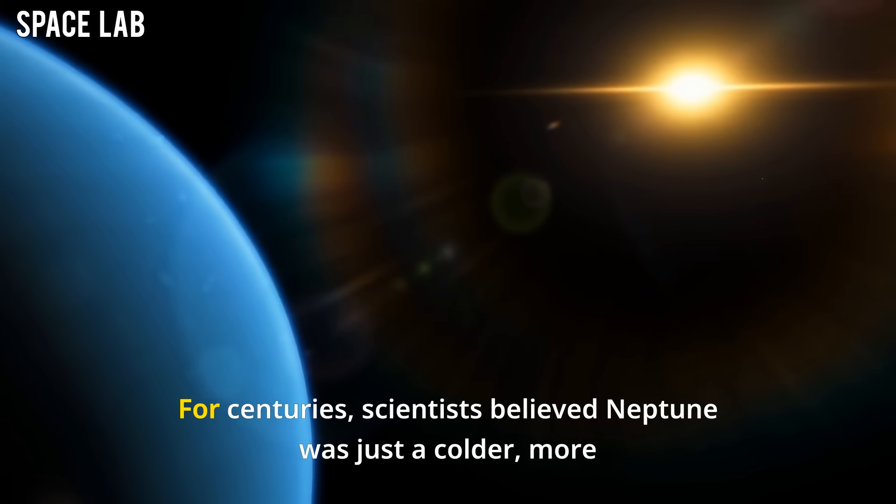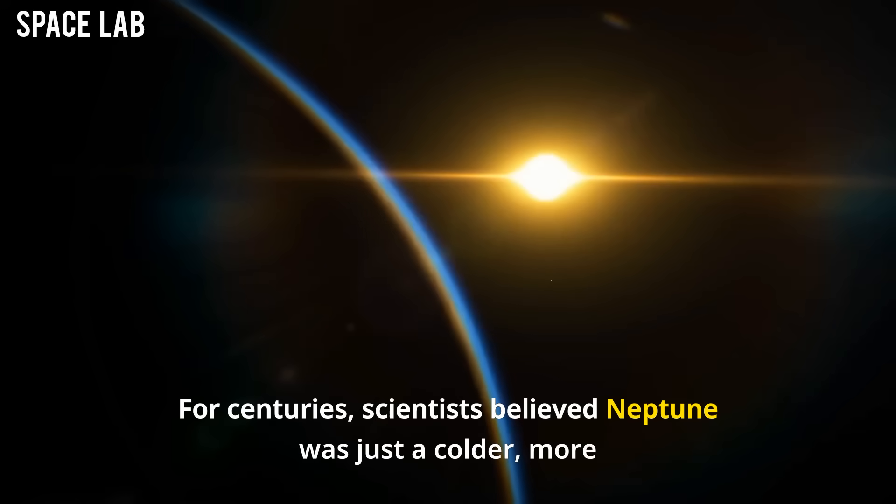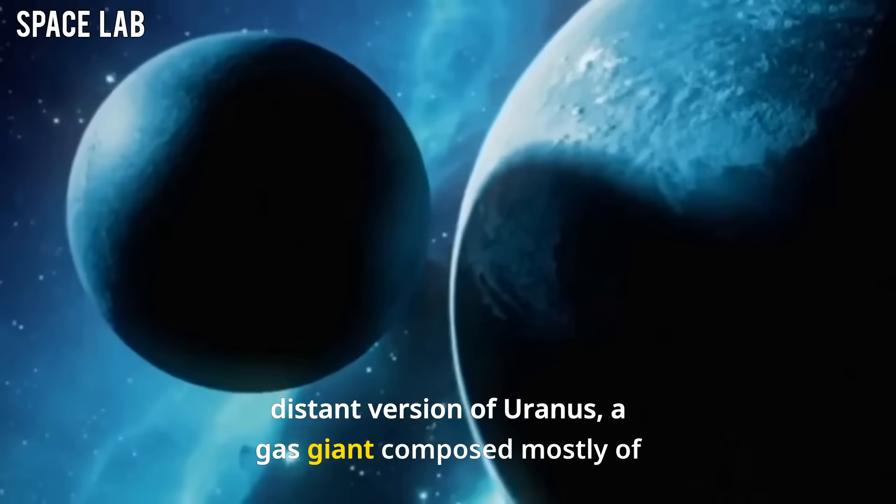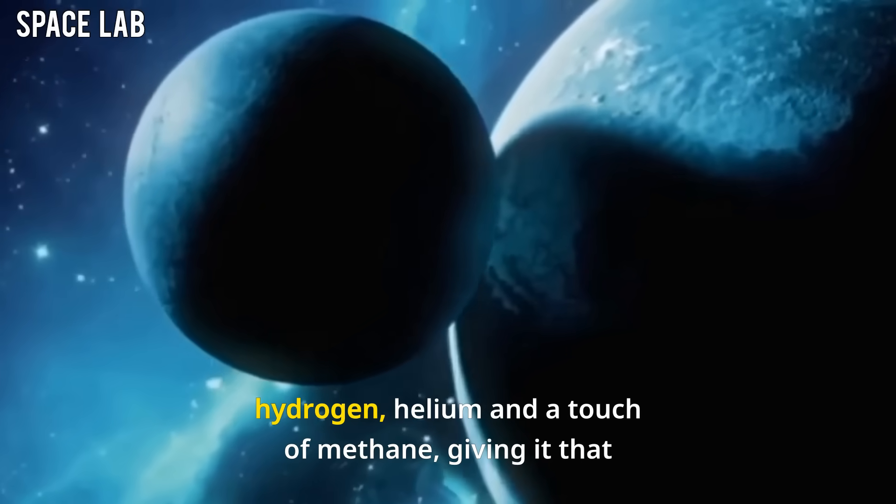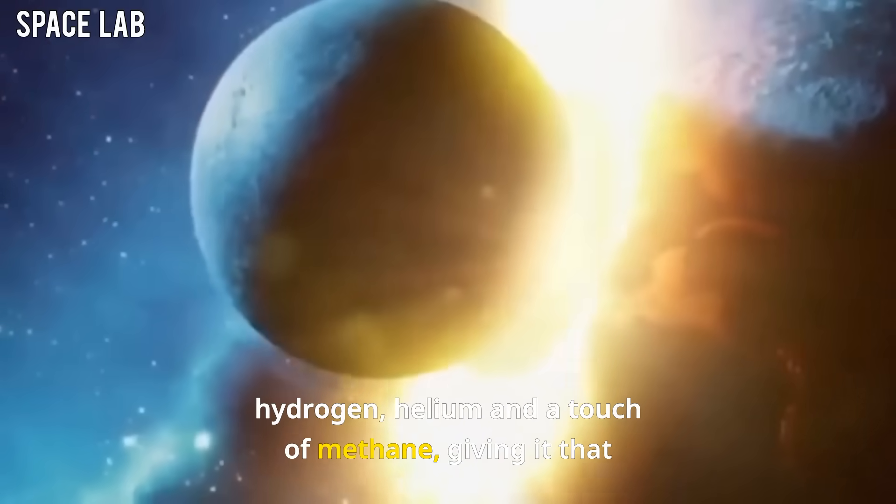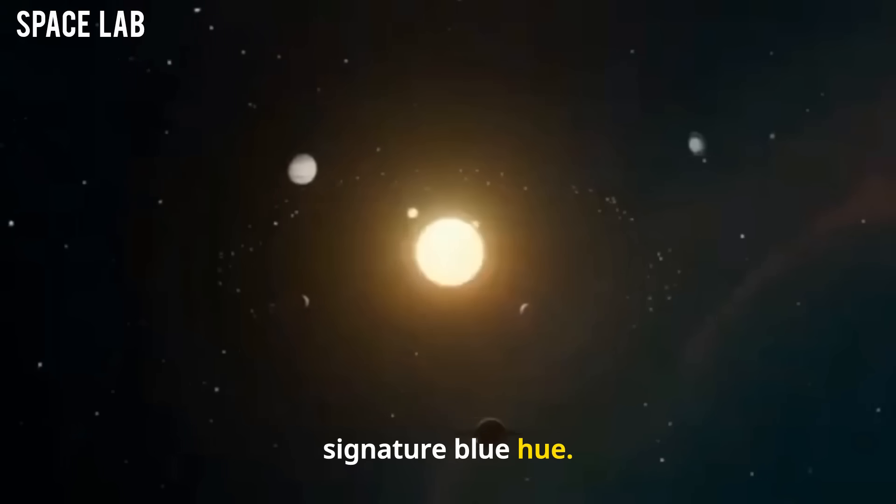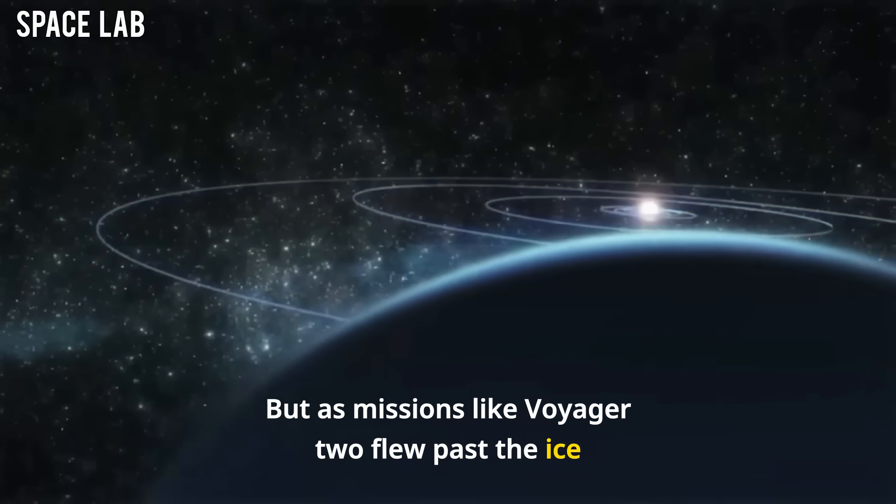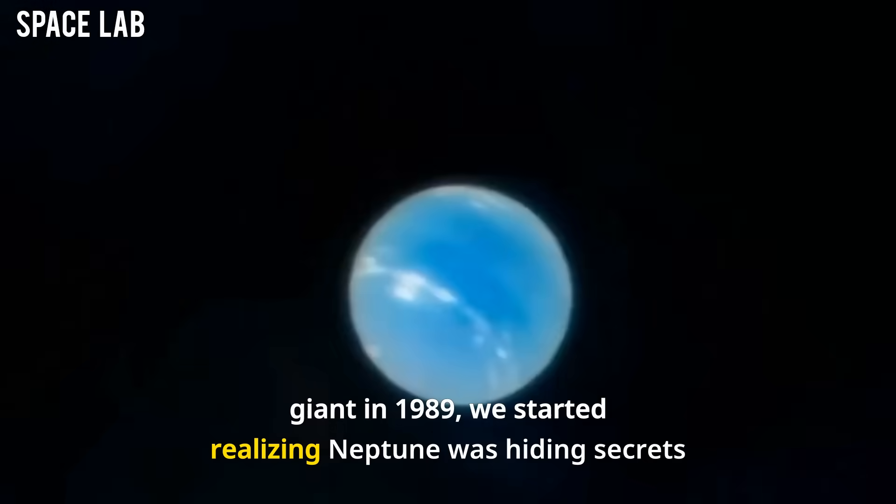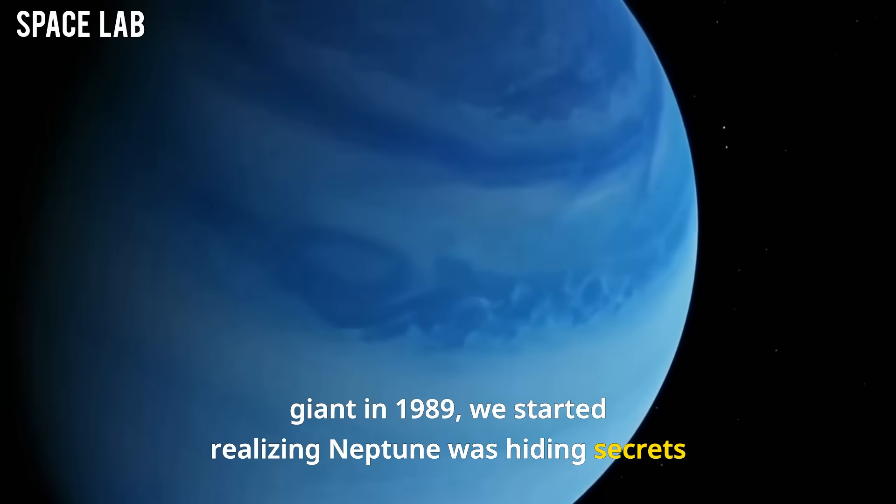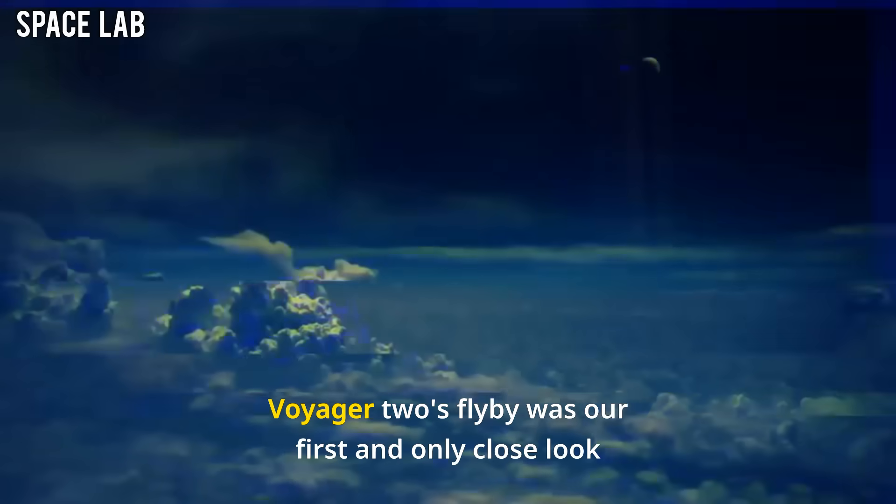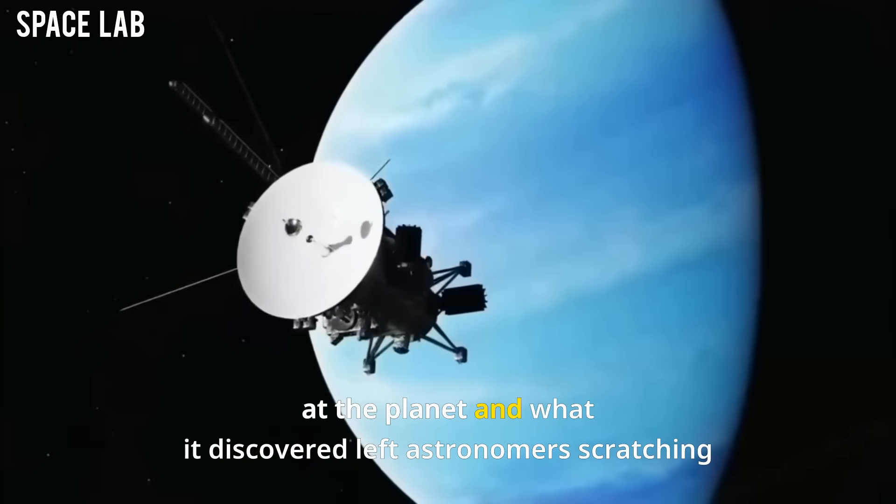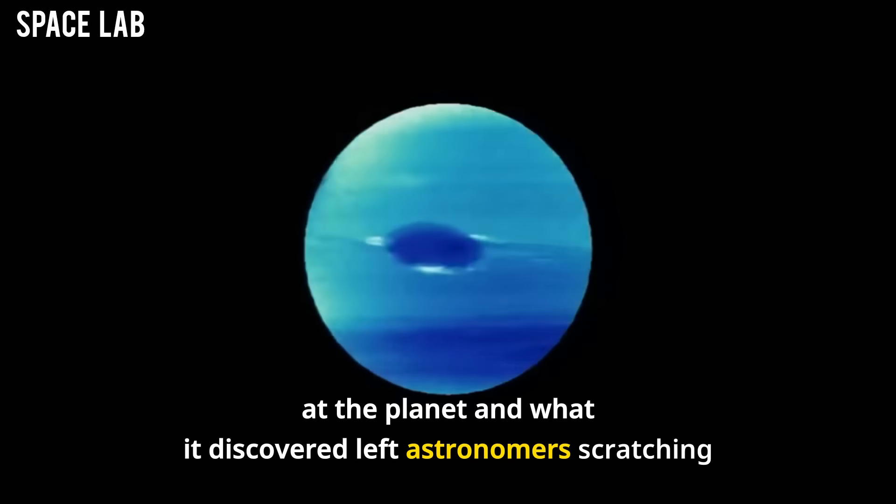Tyson, who is known for his grounded explanations and data-driven insights, has hinted at anomalies in Neptune's behavior and structure that defy all established models. So what exactly is going on? Let's rewind a bit. For centuries, scientists believed Neptune was just a colder, more distant version of Uranus, a gas giant composed mostly of hydrogen, helium, and a touch of methane, giving it that signature blue hue. But as missions like Voyager 2 flew past the ice giant in 1989, we started realizing Neptune was hiding secrets beneath its clouds. Voyager 2's flyby was our first and only close look at the planet, and what it discovered left astronomers scratching their heads.